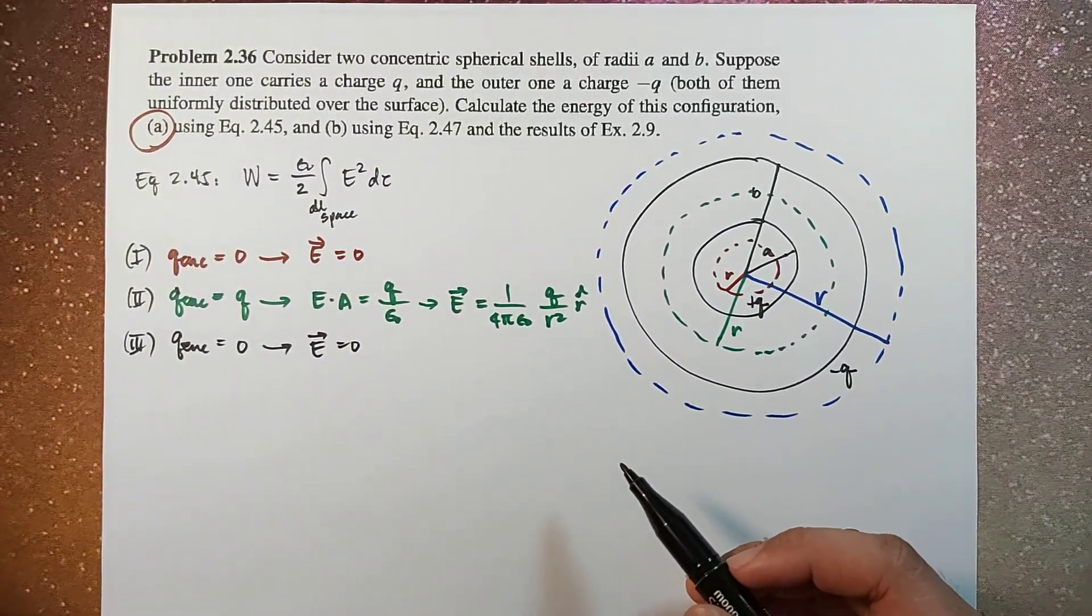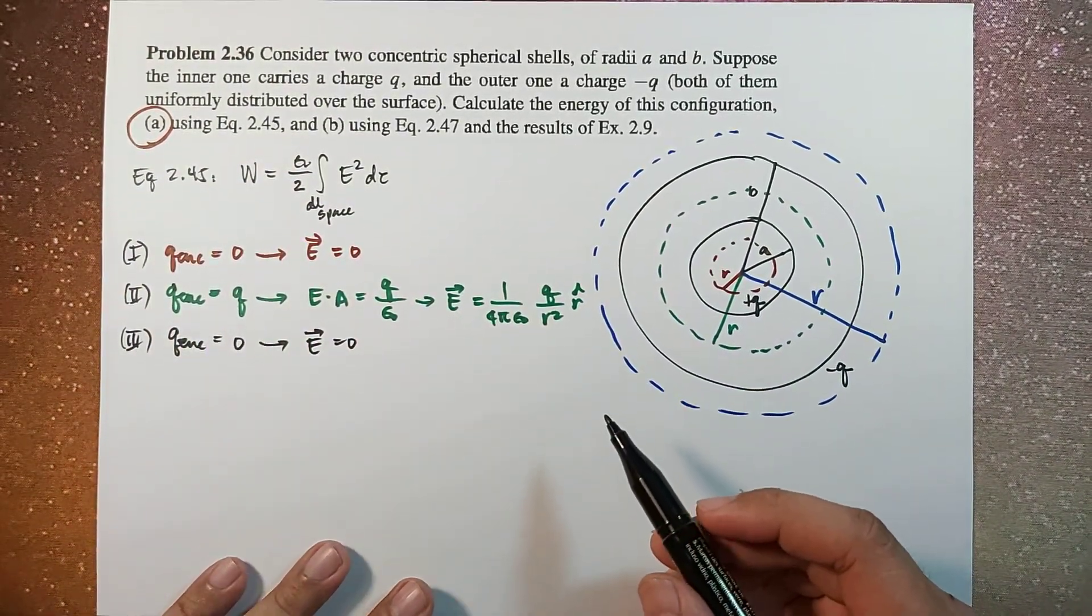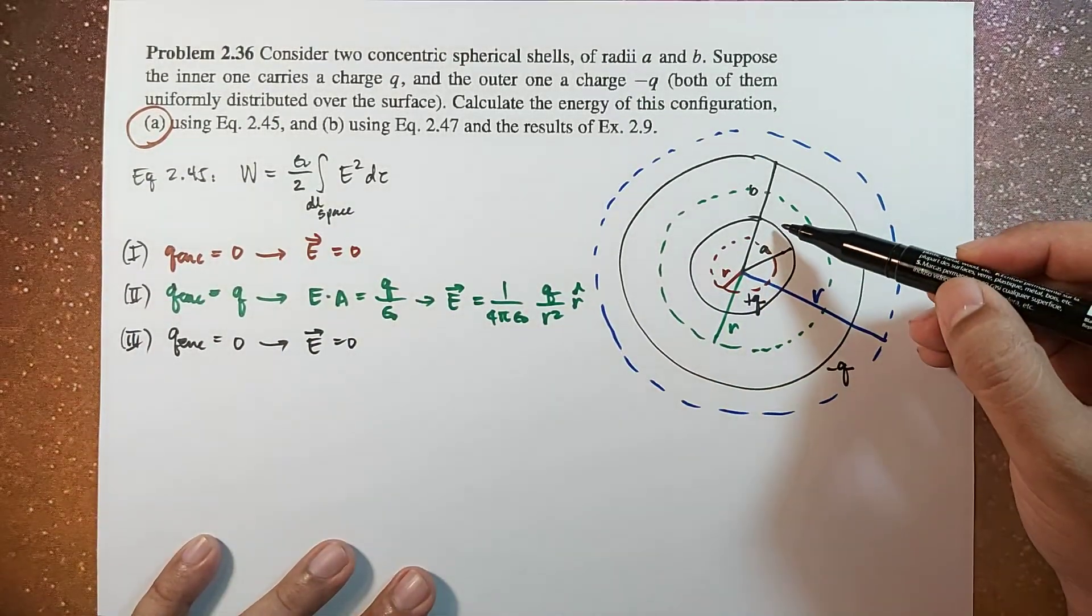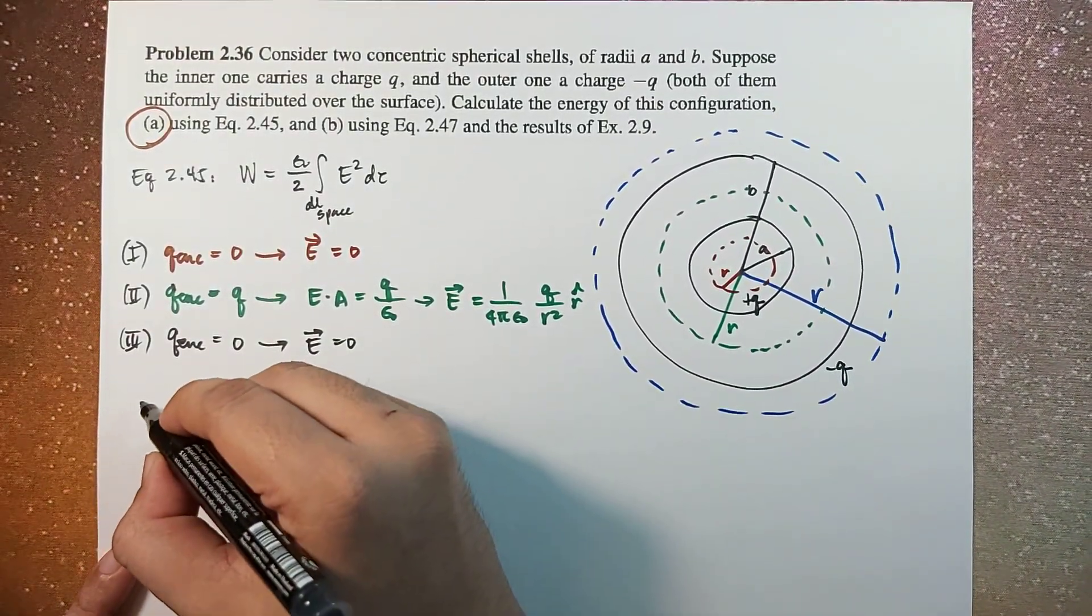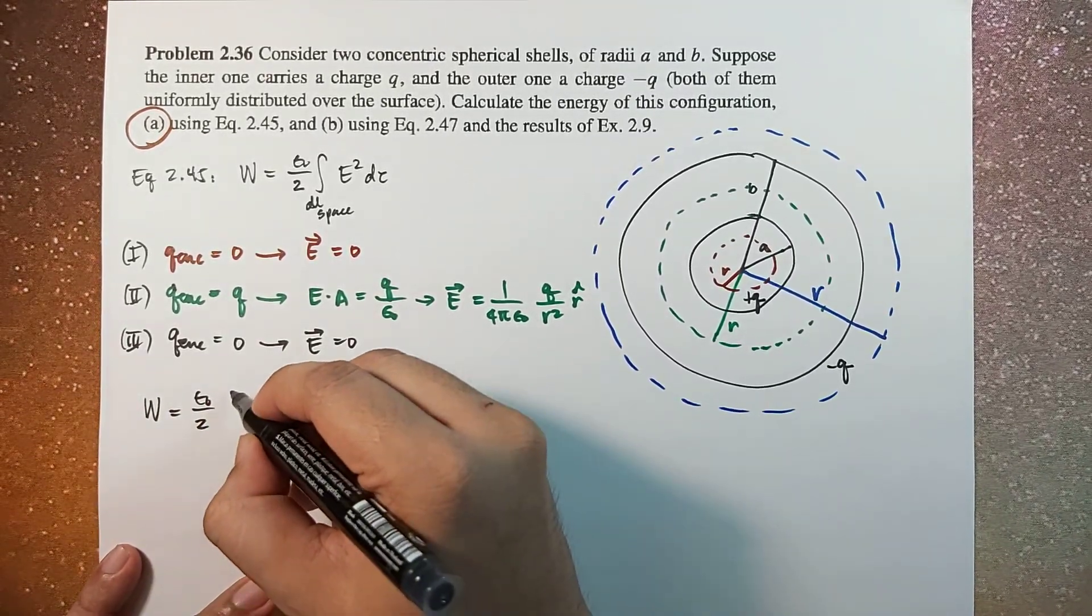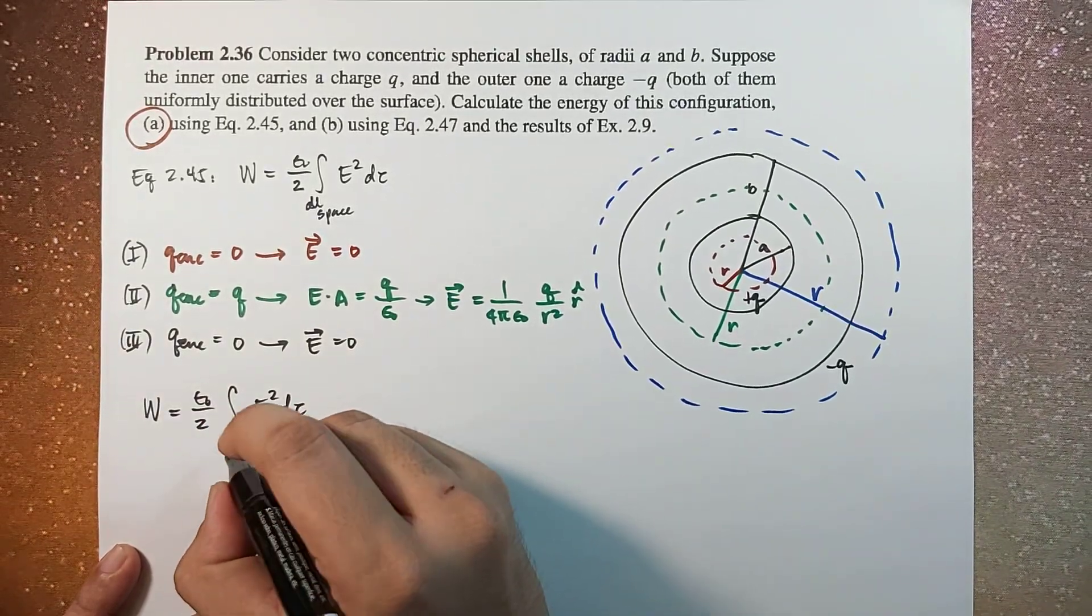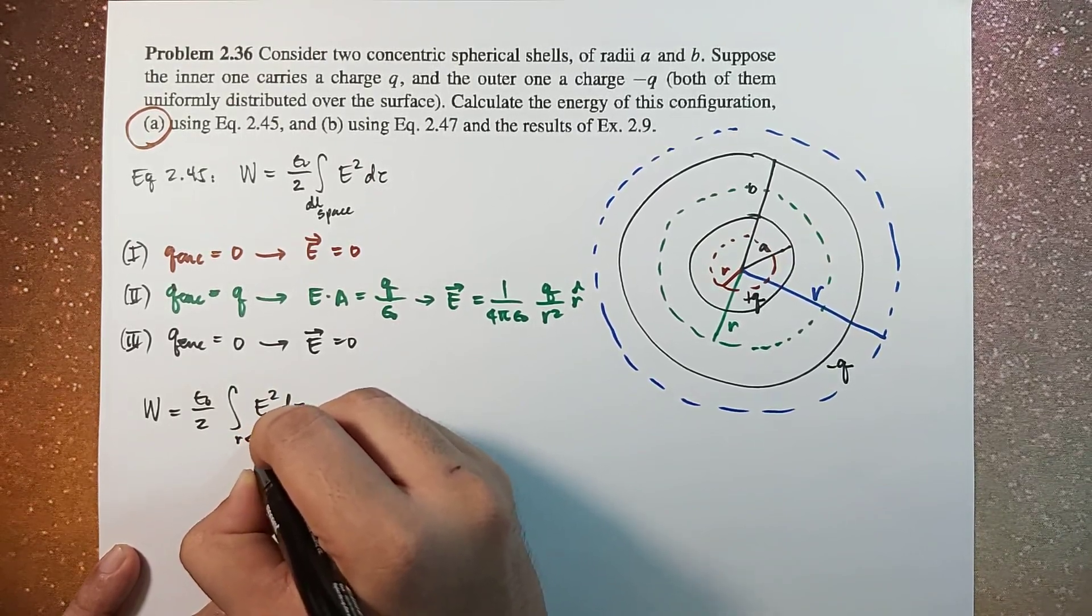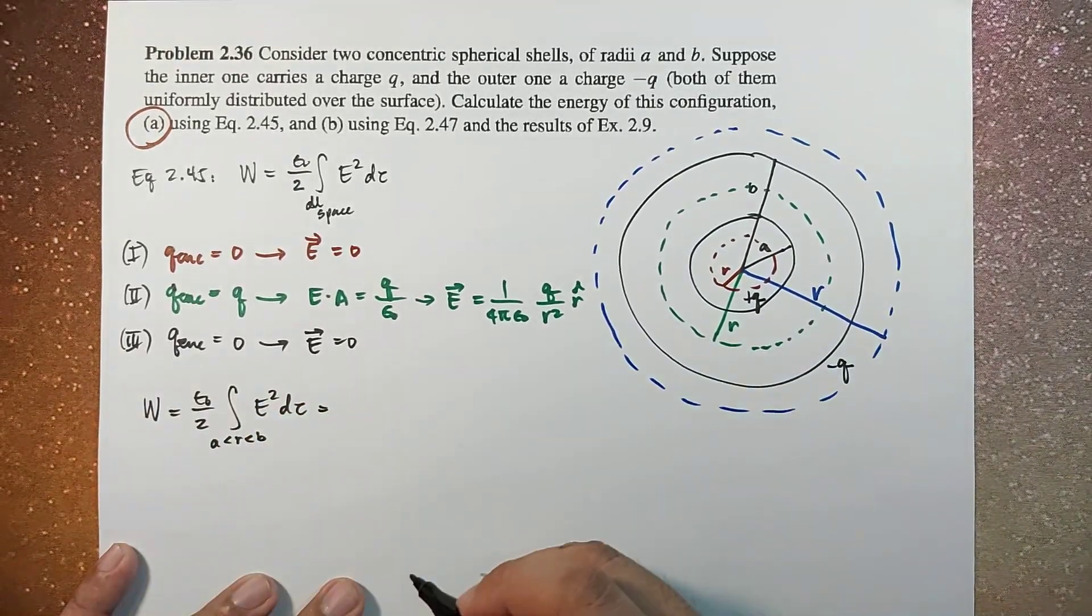So this integral, therefore, will now be reduced to one term wherein the integration will only happen from A to B. So how do we do that? So this integral of E squared D tau where the region of R is less than B and R is greater than A.